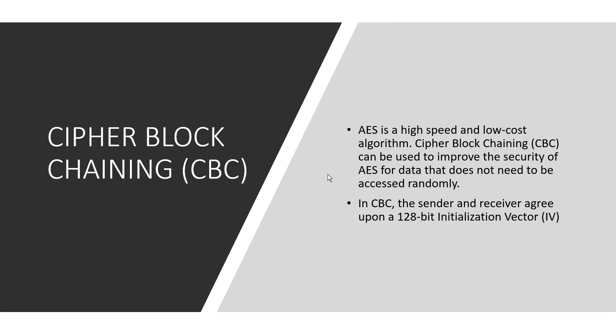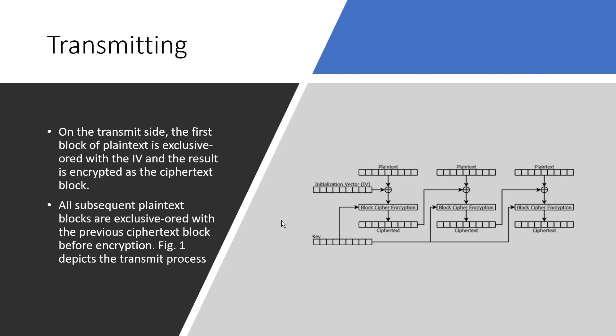We use Cipher Block Chaining, or CBC. AES is a high-speed and low-cost algorithm. The CBC mode can be used to improve the security of AES for data that does not need to be accessed randomly. The sender and receiver agree upon a 128-bit initialization vector, or IV. The process for transmitting: starting with the plain text and the agreed-upon IV, AES block cipher encryption produces ciphertext blocks that are chained together until the end, starting from the IV.